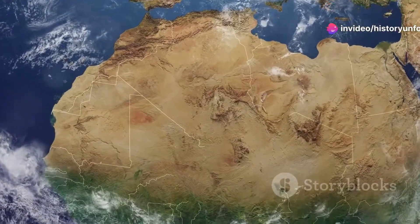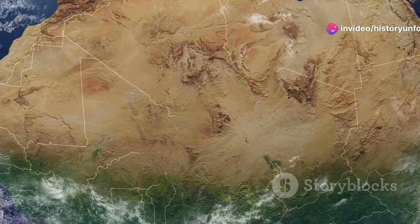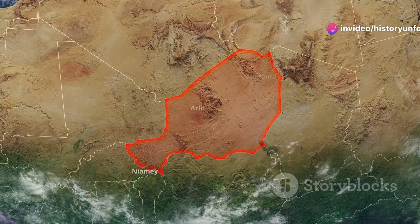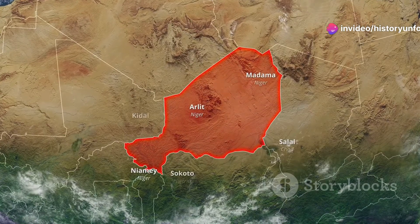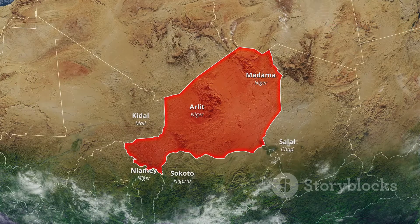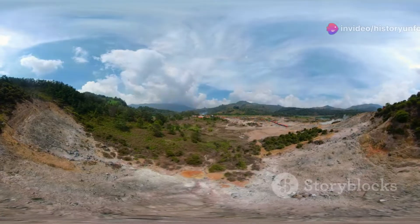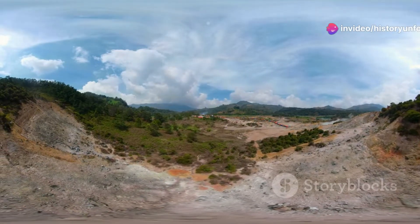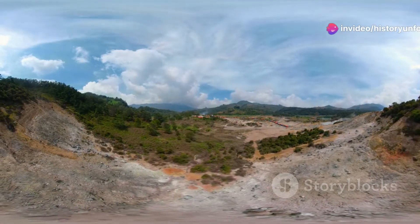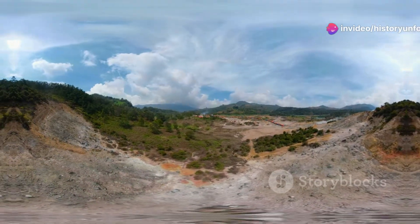In some areas, the cratons are covered by sedimentary basins such as the Tindouf Basin, Taudeni Basin, and Congo Basin, where the underlying archaic crust is overlaid by more recent Neoproterozoic sediments. The African Plate is rifting in the eastern interior of the African continent along the East African Rift.